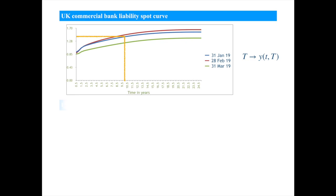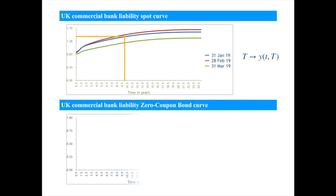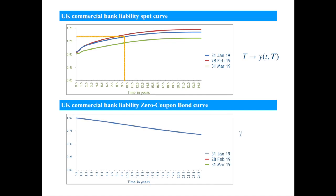You can also represent the term structure using discount factors, which you can easily calculate from the spot interest rate we just saw. These are also called the prices of zero coupon bonds because they essentially represent the present value of one pound in the future. So one pound in five years' time is worth 94 pence, whereas one pound in ten years' time is worth 87 pence. Again, as the date moves, the curve shifts, keeping the modelers busy.